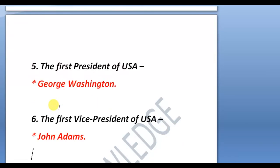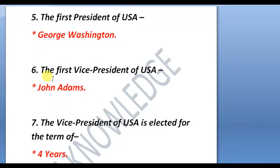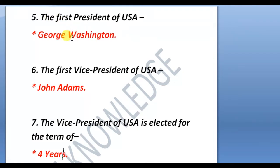Next question: the first president of the USA was George Washington. The capital of the United States of America is Washington D.C. This name also comes from the first president's name, George Washington. D.C. means District of Columbia.